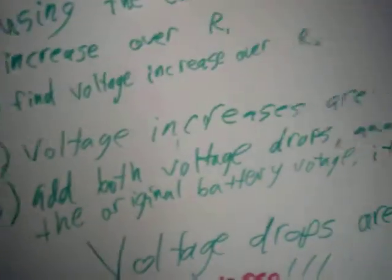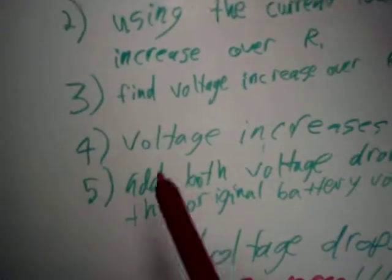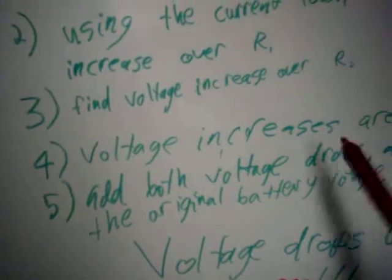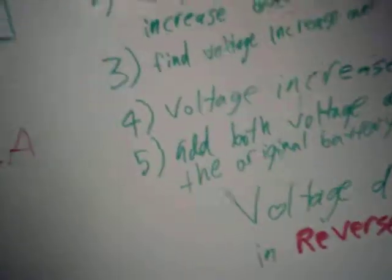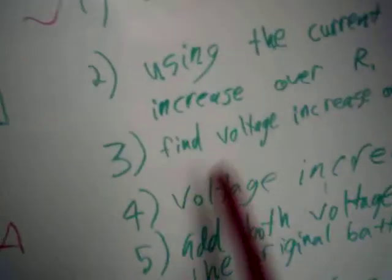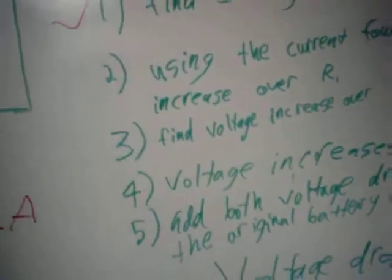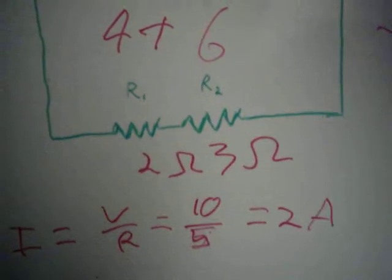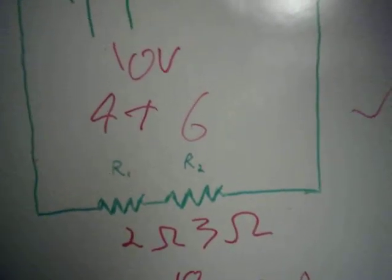I skipped step four because that just says that the voltage increases are the decreases, which is the drops, is what I said right here, and step three was just find voltage increase over resistor 2. Now, you know all you need to know about voltage drops.